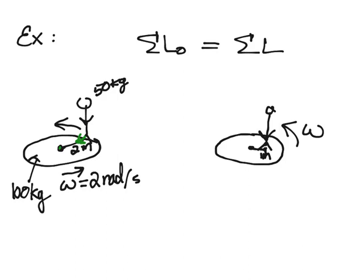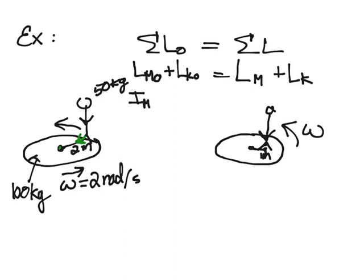I need to calculate the angular momentum at the beginning and at the end. I'll break it down: L of the merry-go-round initial plus L of the kid initial equals L of the merry-go-round final plus L of the kid final. Since each L is I·omega, I have: I_merry-go-round·ω₀ + I_kid·ω₀ = I_merry-go-round·ω_final + I_kid·ω_final.